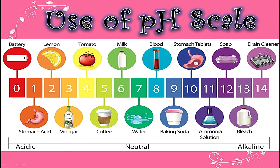Water is neutral so its pH value is 7. Our blood is slightly basic with pH 7.4 to 8. Baking soda is also a weak base with pH 9. Stomach tablets used to neutralize acidity have pH 10. Ammonia solution's pH value is 11. Soap contains a base or alkali, therefore its pH value is 12. Bleach has pH 13 and drain cleaner has pH 14 — it is a strong basic substance.